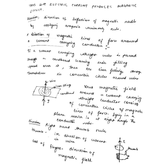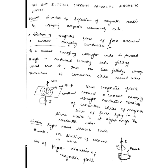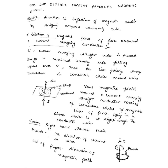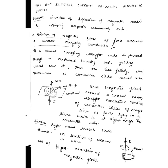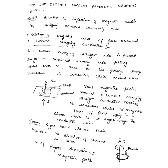You can also perform this experiment at home. Take a conducting wire, pass it through a hole in a cardboard, and scatter small iron filings or small iron pieces on the cardboard. When you pass current through the wire, the iron filings arrange themselves in concentric circles around the wire. This shows that for a straight conductor, the magnetic field is in the form of concentric circles.